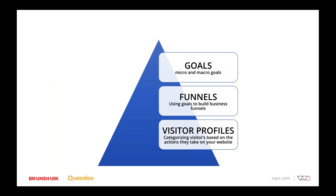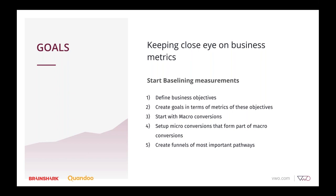These are the three pillars that will instantly get you started with visitor research. One mistake most people make is called A-plus research — getting fascinated by fancy heat maps and recordings, finding something interesting, but never translating it into a hypothesis because there's no structured process. The first step to doing research is to have a goal. Defining your business goal is the starting point. You should clearly know what the most important actions are that you want users to take. Defining and tracking the goal is the most important step.